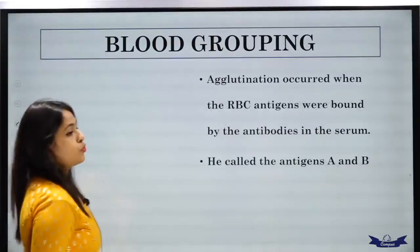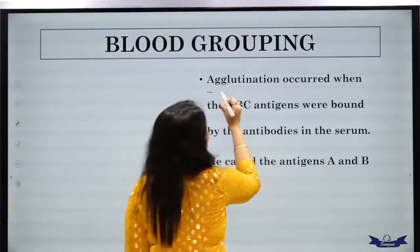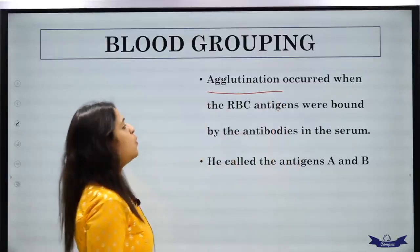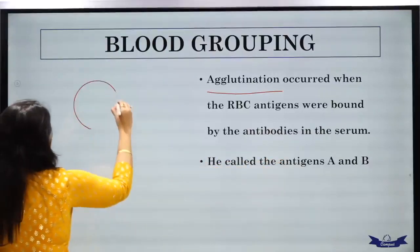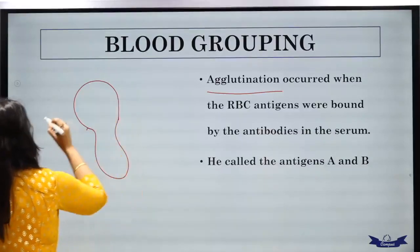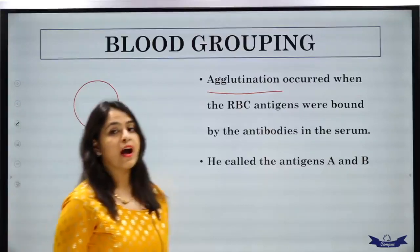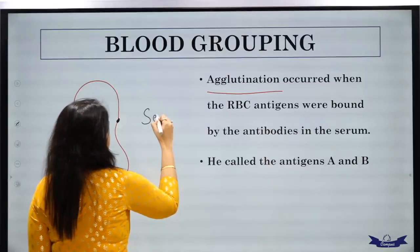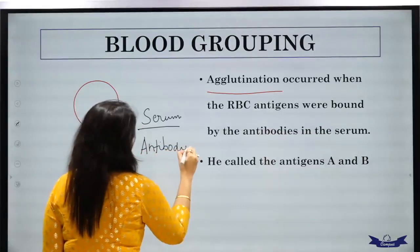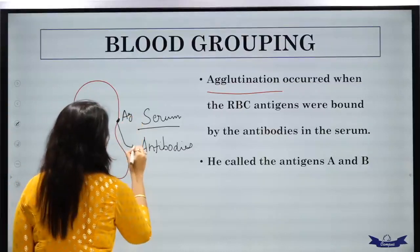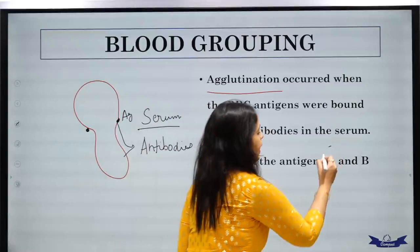When they saw that the antigens and the antibodies reacted, what was the name of that reaction? Agglutination. Agglutination occurred when the RBC antigens were bound by the antibodies in the serum. Red blood cells — you know how they are? Biconcave disc. It was marked on the surface by antigens. The antigen combined with antibodies in serum caused the agglutination reaction, and he called the antigens A and B.